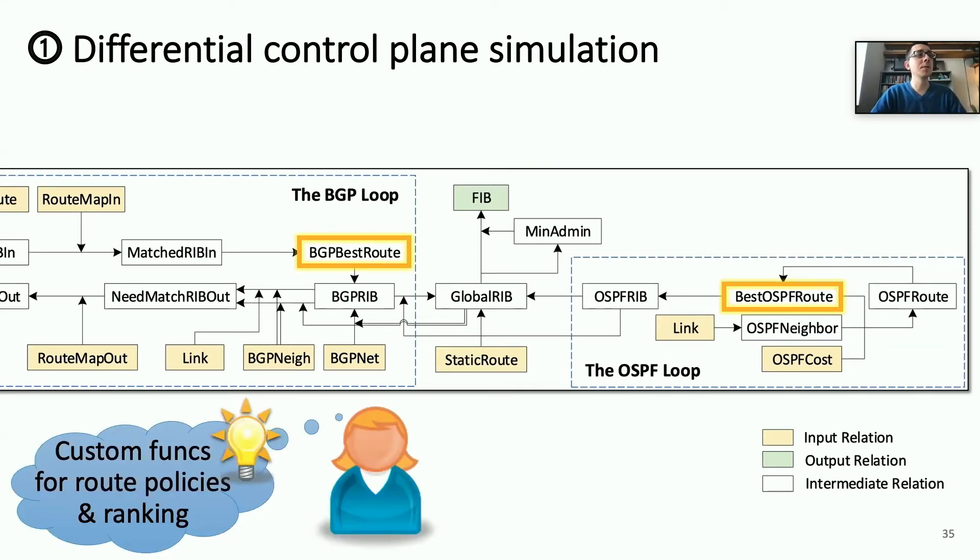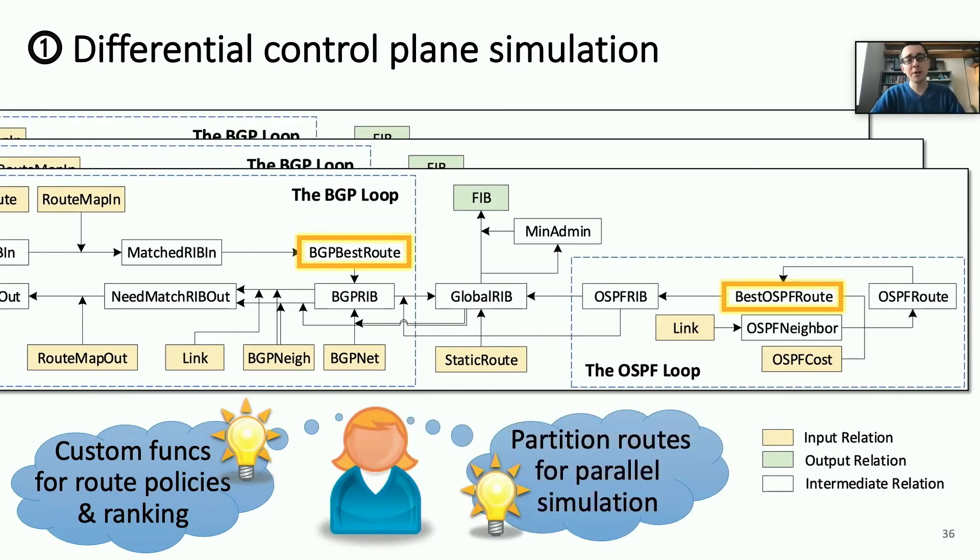Now, in order to make this process more efficient, we actually take some of the more complex aspects of this model, like routing policies and ranking of best routes, and actually express them using custom functions rather than using DD logs built-in primitives. And that's because if we use DD logs built-in primitives, we'd actually need a very large number of rules and a lot of extra relations, whereas we can express it much more efficiently using customized functions. Additionally, we can actually partition the routes of the network into non-overlapping sets of routes whose routing and decision processes don't impact each other, and that allows us to simulate different segments of the control plane in parallel.